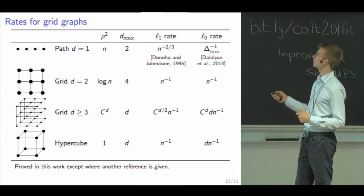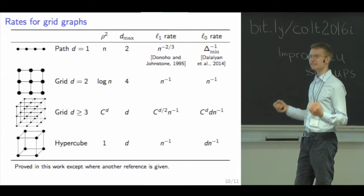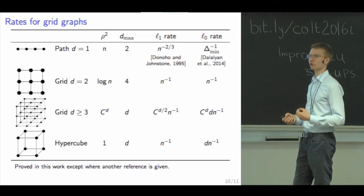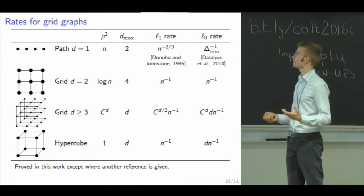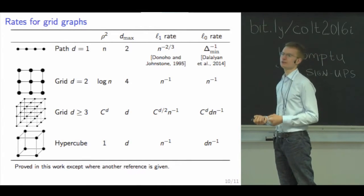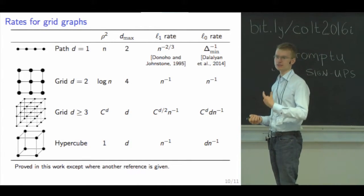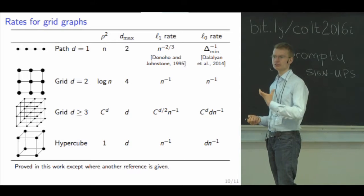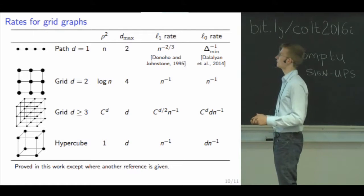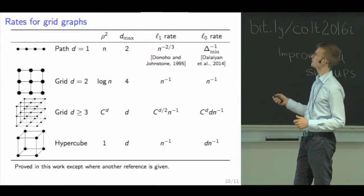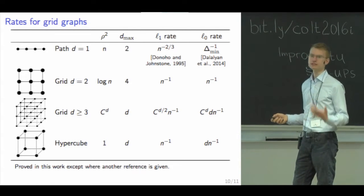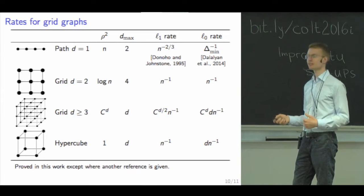For well-spaced signals this rate can be of order one over n, but it can be arbitrarily bad if the constant pieces of the signal are very clustered together. We see that these subtleties all disappear in the high-dimensional case.